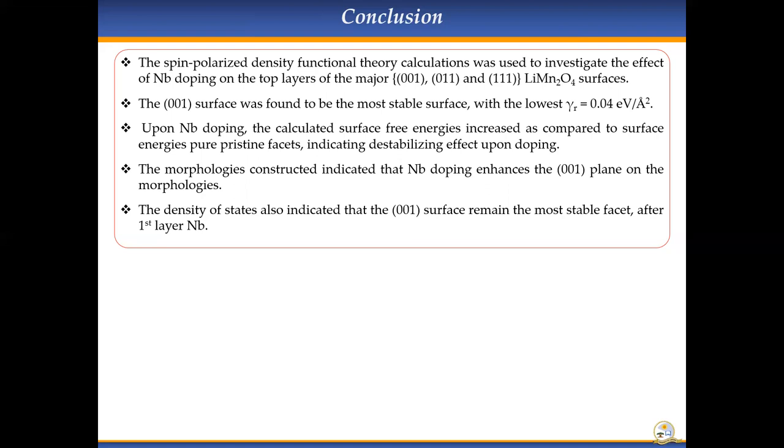The density of states confirmed that the 001 is the most stable surface, followed by the 011 and 111 surfaces. However, the destabilizing effect occurred on the individual surfaces, but the stability trend of the surfaces remained the same as in the pure pristine surfaces.